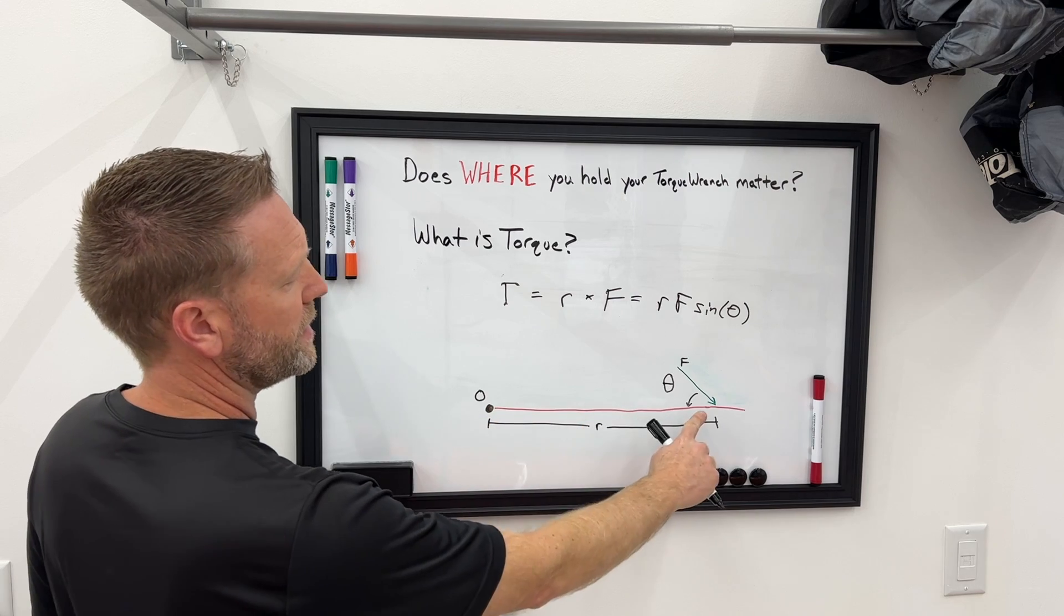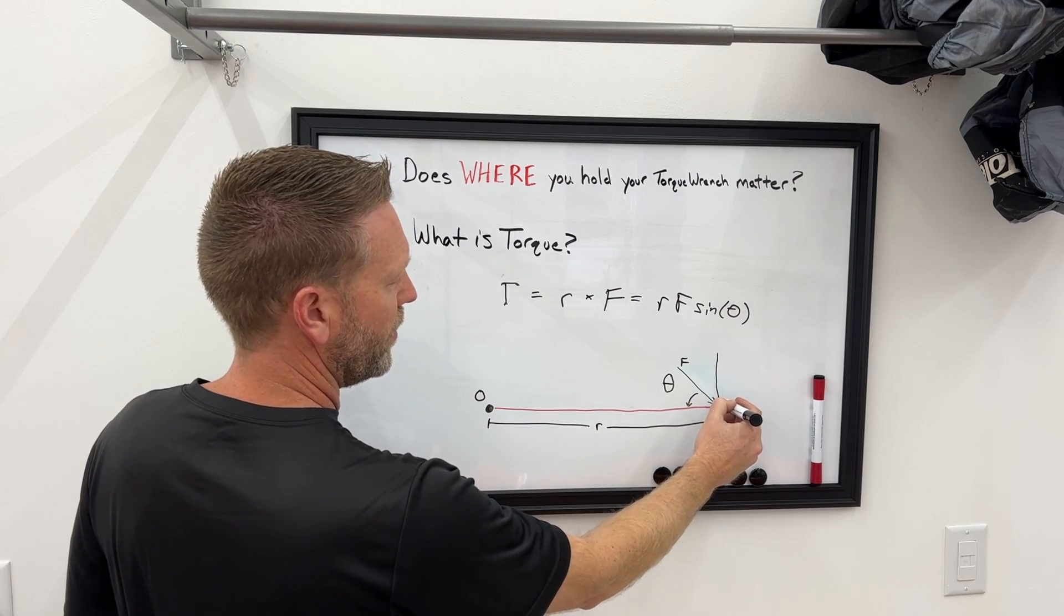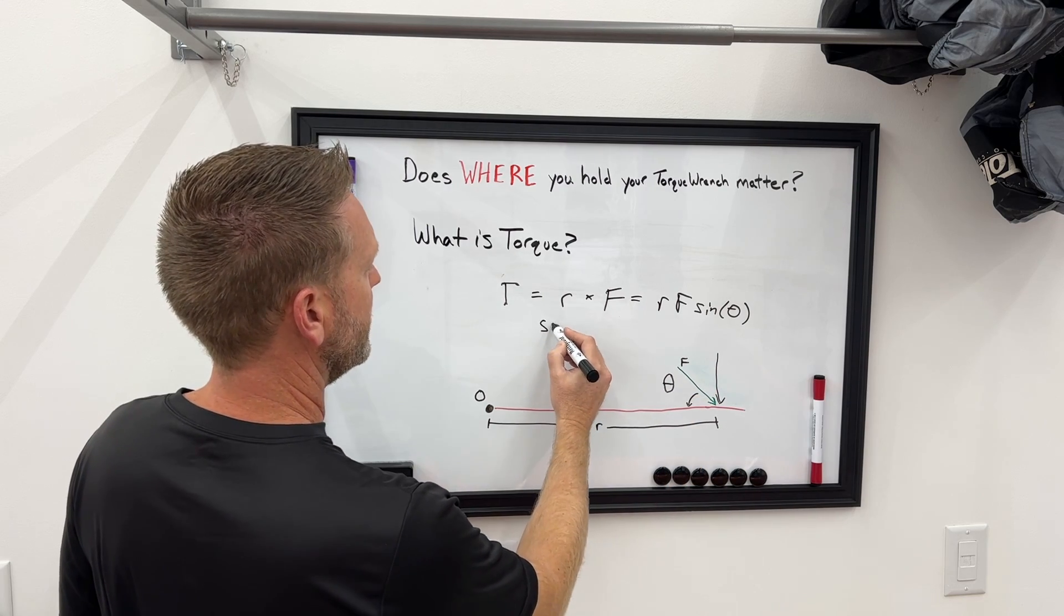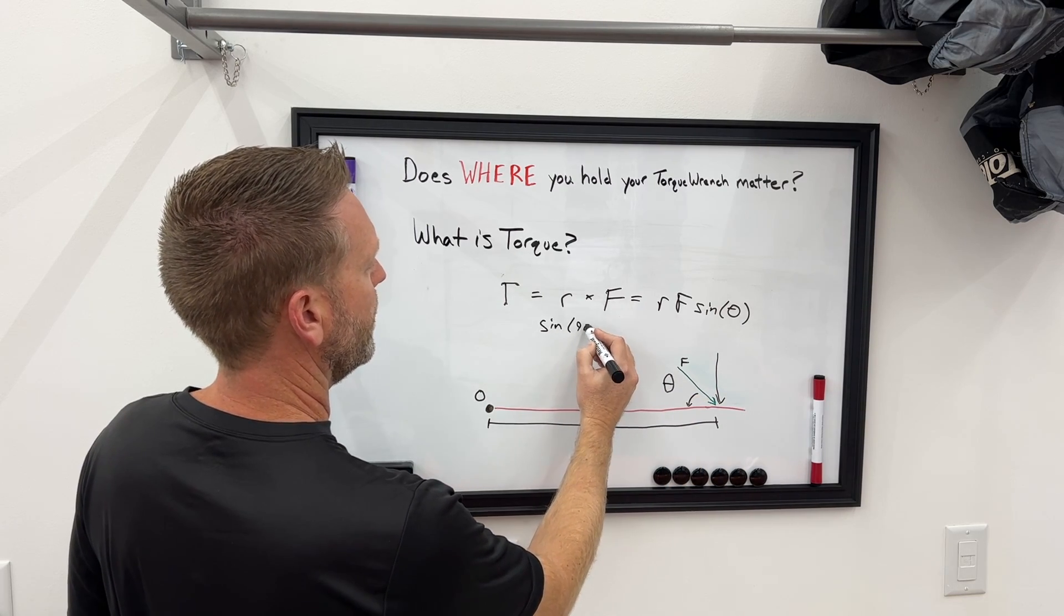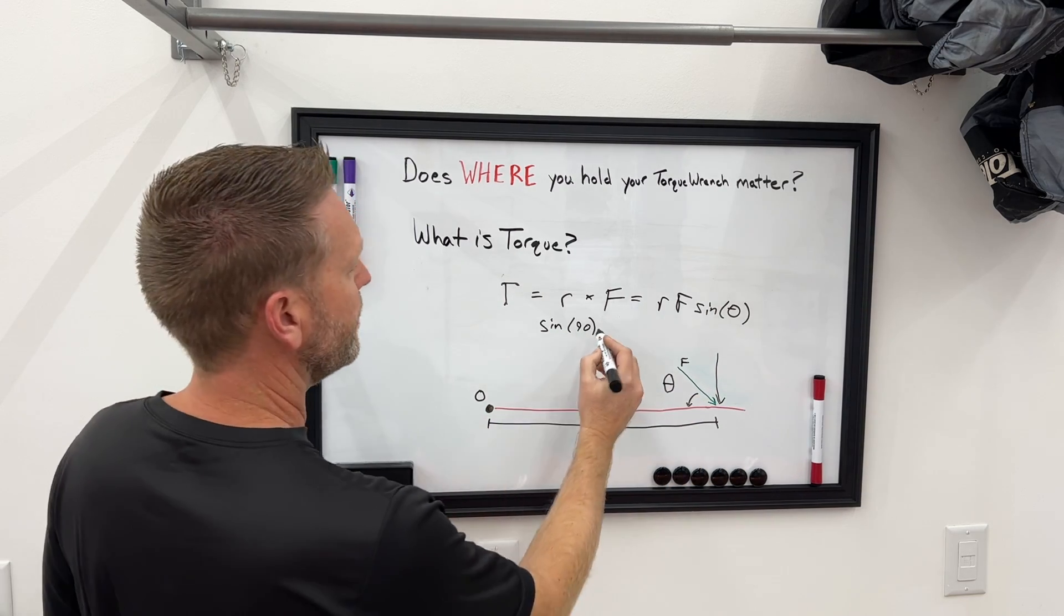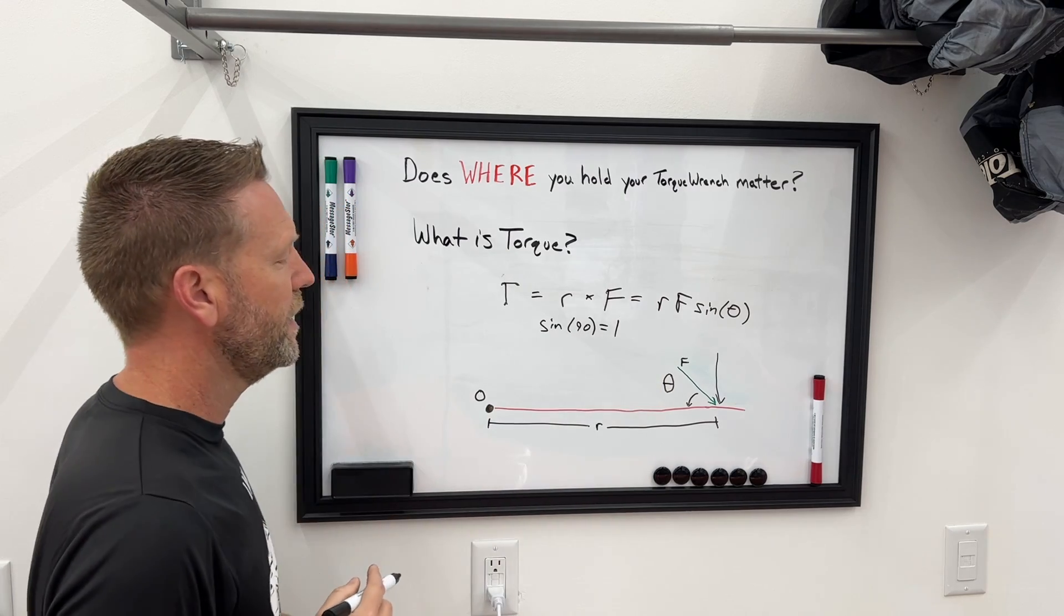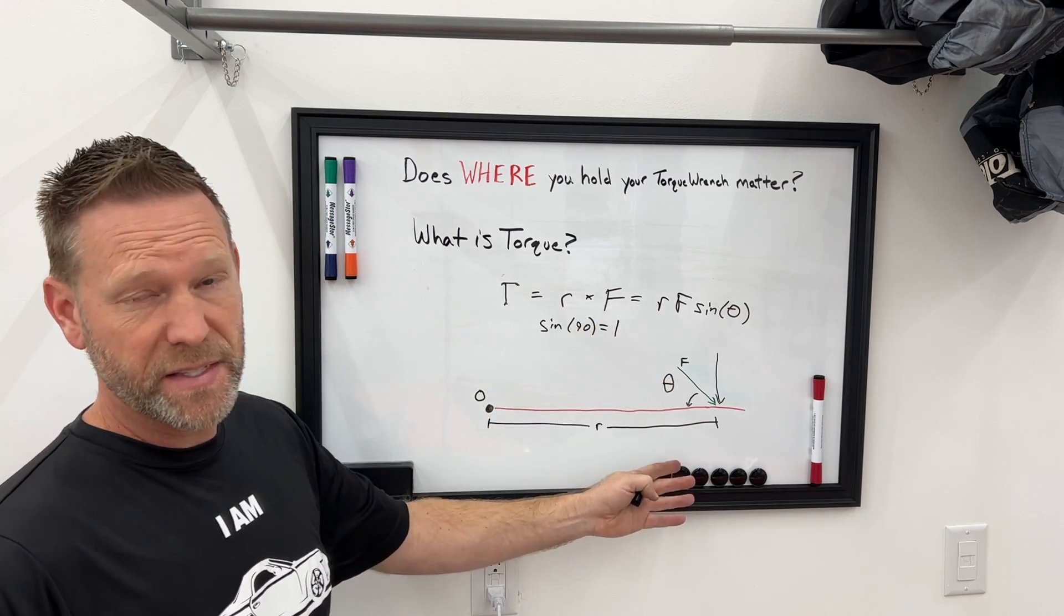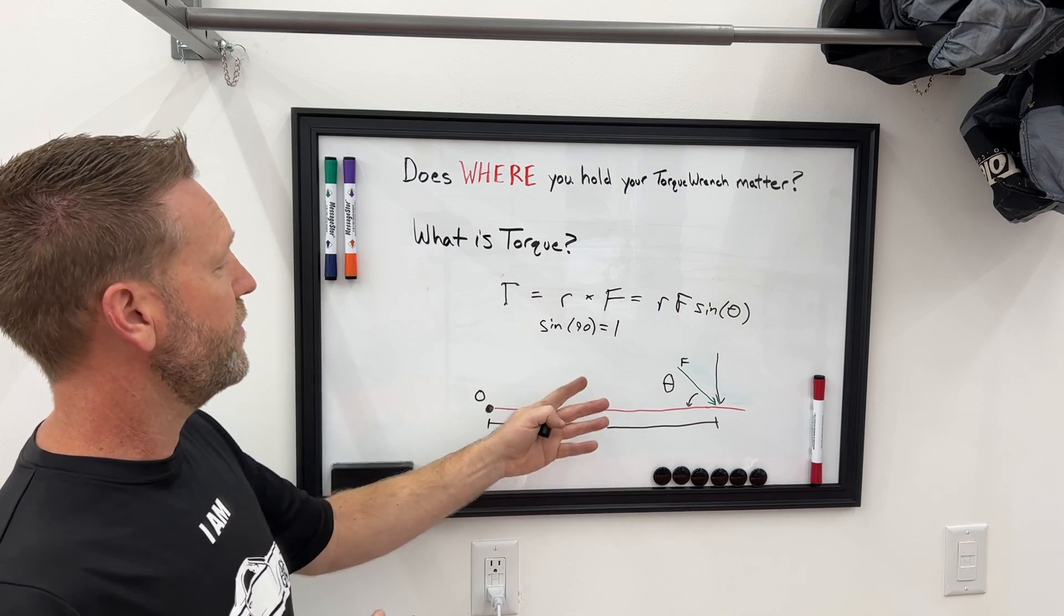So if we're thinking about this as a torque wrench again, and we are applying force straight down here, our angle is 90 degrees. So you probably don't remember, but from math class, the sine of 90 degrees equals 1. So therefore, in this case, it does equal the distance times the force, so we don't have to worry about the sine.